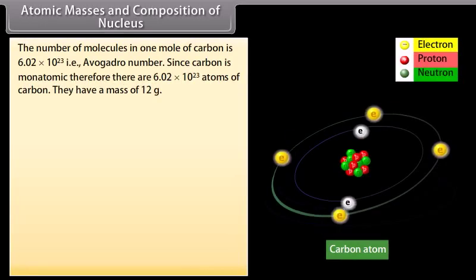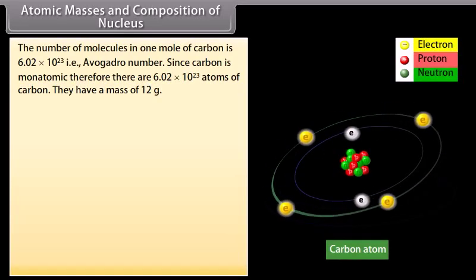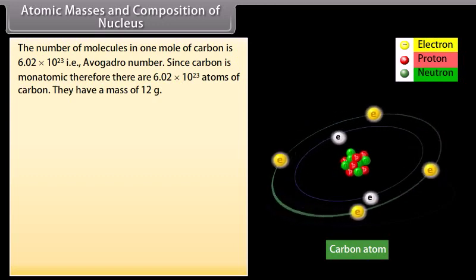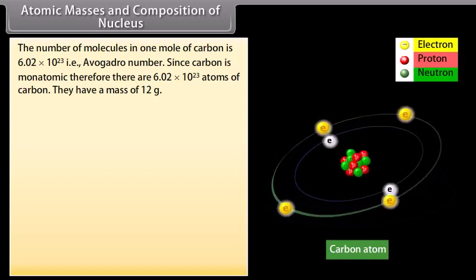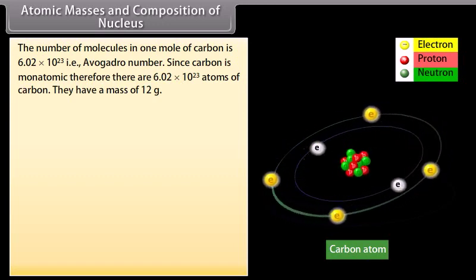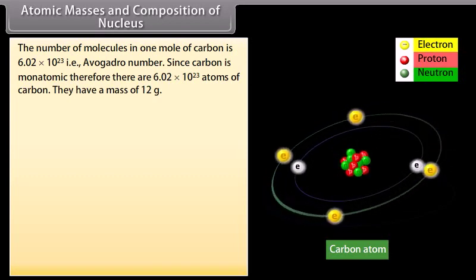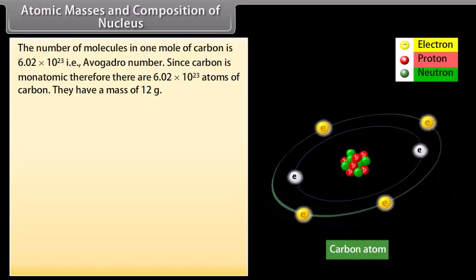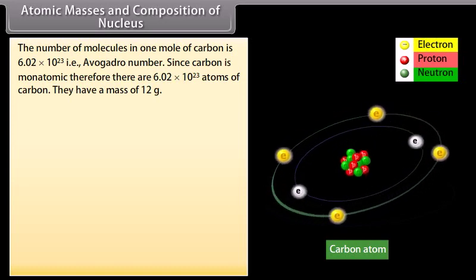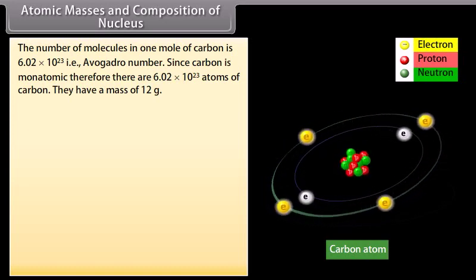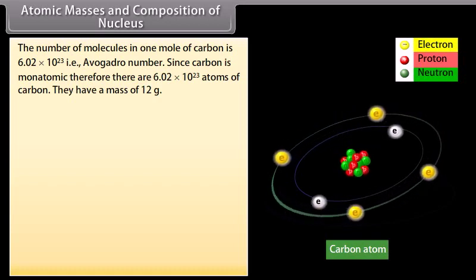Atomic masses and composition of nucleus. The number of molecules in one mole of carbon is 6.02 × 10²³, that is Avogadro number. Since carbon is monoatomic, therefore there are 6.02 × 10²³ atoms of carbon. They have a mass of 12 gram.